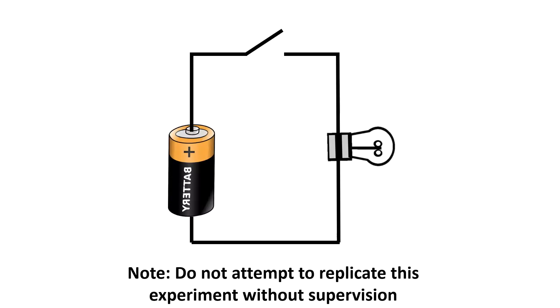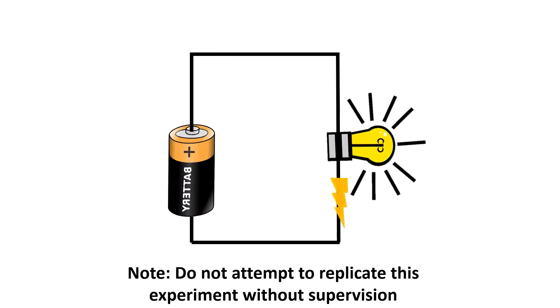Let's see if we can apply what we learned to a simple circuit activity. Take this circuit for example. When we flip the switch, the electricity flows from the positive terminal of the battery, illuminates the light bulb, and passes on to the negative terminal of the battery.